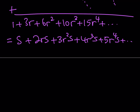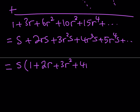So for my sum, I can write something like: S plus 2rS plus 3r²S plus 4r³S plus 5r⁴S, and so on and so forth. We get the pattern. Let's go ahead and take out S, because it's a common factor. When you take out S, you're going to be getting 1 plus 2r plus 3r² plus 4r³ plus 5r⁴, and so on and so forth.